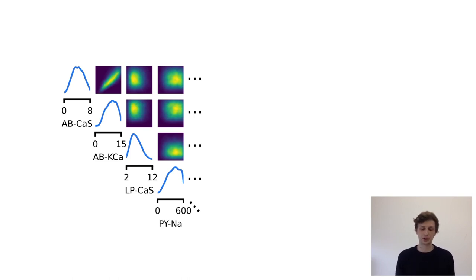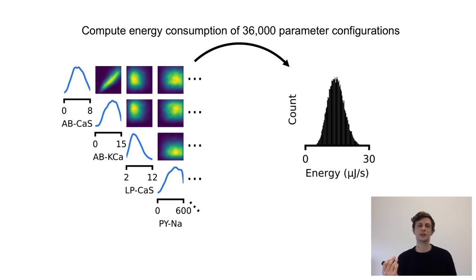We then used this distribution to compute the energy consumption of 36,000 parameter configurations. The figure shows a histogram over these energy consumptions, and as you can see, the most efficient circuit configuration and the most wasteful circuit configuration differ by an order of magnitude in their energy consumption.